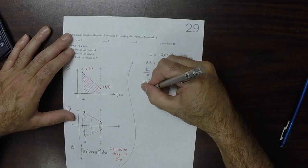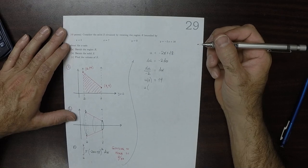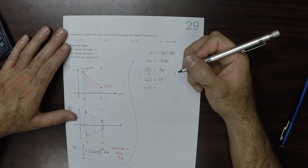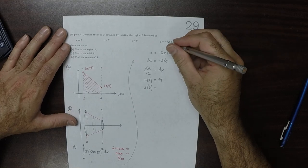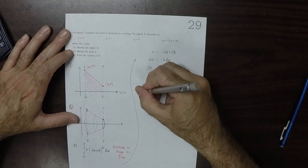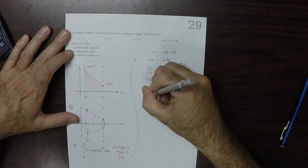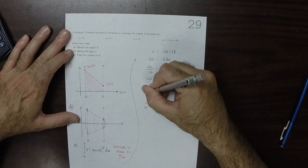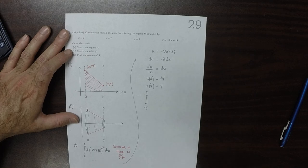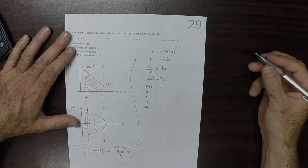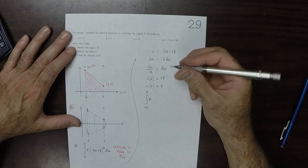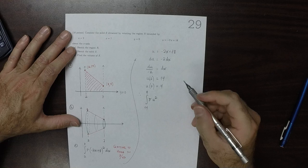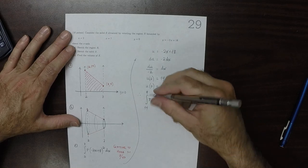And u evaluated when x is 7 is 4. So doing that substitution, we now have the integral from 14 to 4. Notice that the limits are in the opposite order of what we're accustomed to, of pi and then u squared, and the differential becomes du over negative 2.